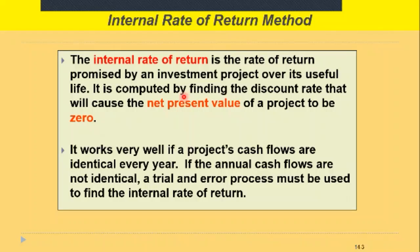How do you find it? You find the discount rate that will cause the net present value of a project to be zero. When NPV is zero, whatever discount rate you're using is the internal rate of return — the IRR. It works simply if a project's cash flows are identical every year. If the annual cash flows are not identical, a trial and error process must be used to find the internal rate of return, because you have to work back through the tables in reverse order from the NPV.